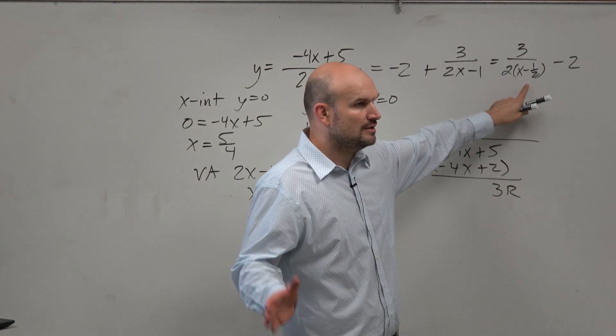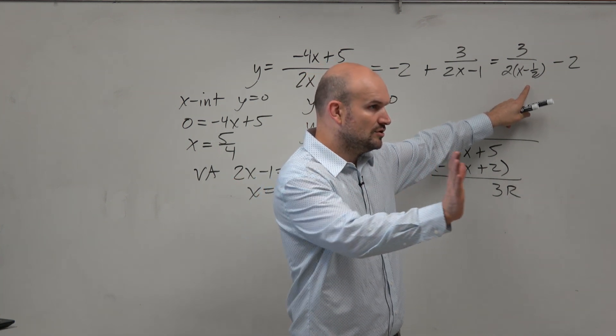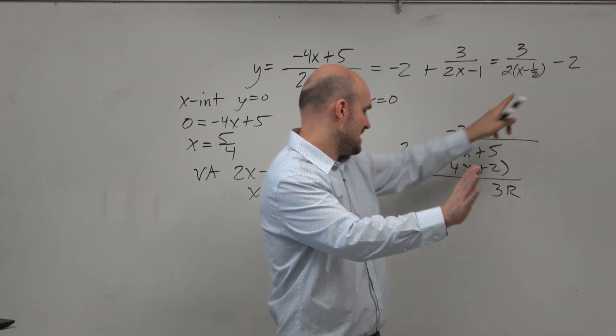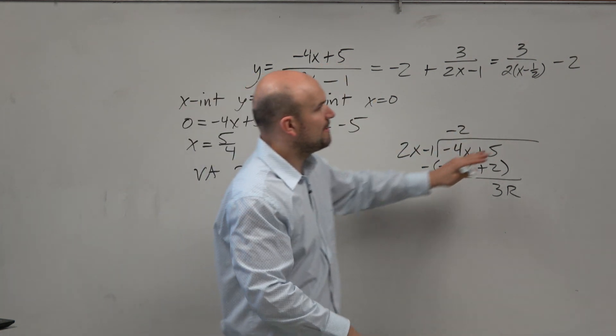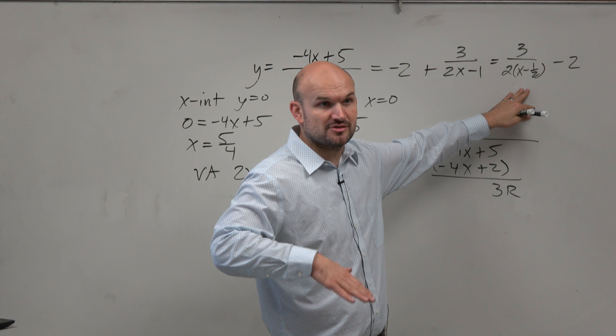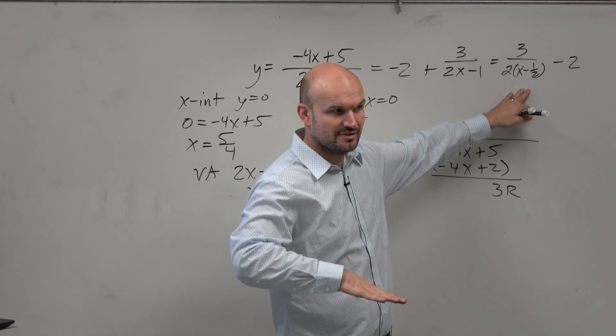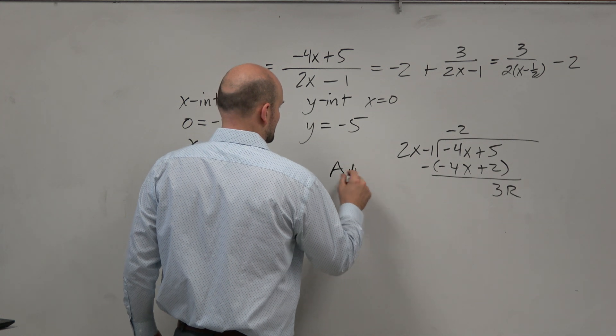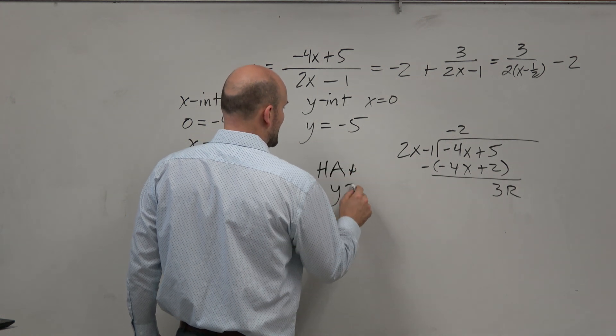What are the transformations? What's the horizontal transformation? 1/2 to the right. So if the vertical asymptote was at 0, now it's at x equals 1/2, which I already knew, right? What about my vertical transformation? Down 2. So therefore, my horizontal asymptote is at y equals negative 2.